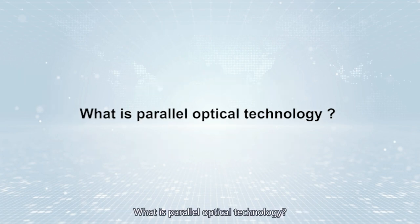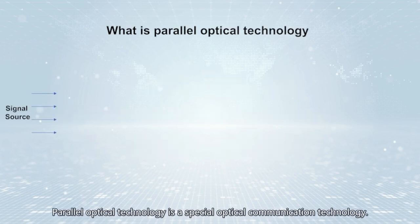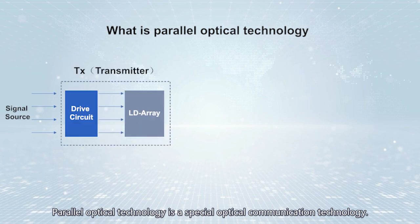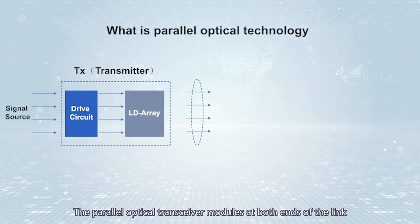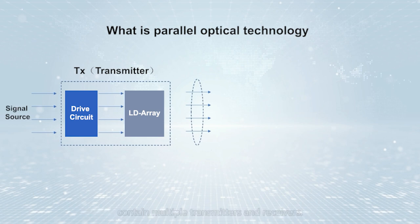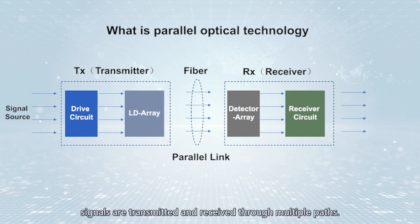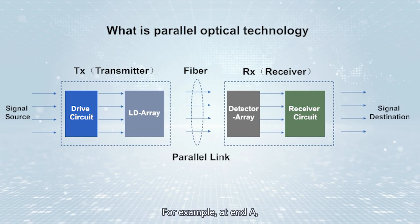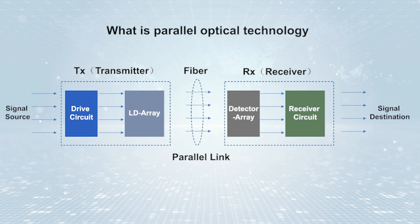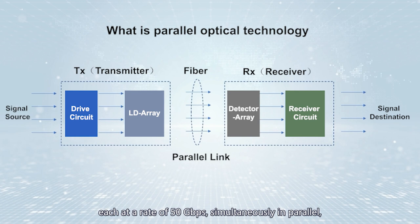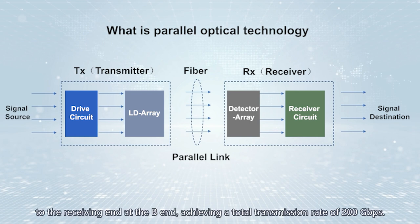Parallel optical technology is a special optical communication technology. The parallel optical transceiver modules at both ends of the link contain multiple transmitters and receivers. Using multiple optical fibers, signals are transmitted and received through multiple paths. For example, four transmitters transmit over four optical fibers, each at a rate of 50 Gbps, simultaneously in parallel to the receiving end, achieving a total transmission rate of 200 Gbps.